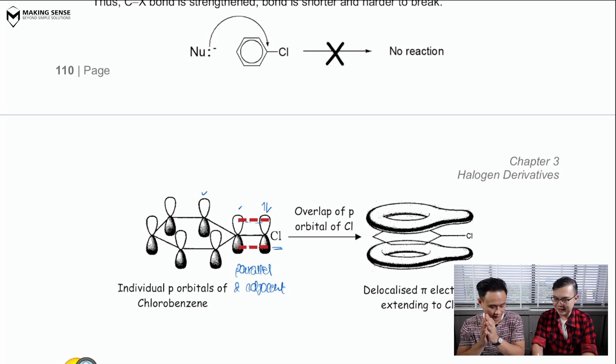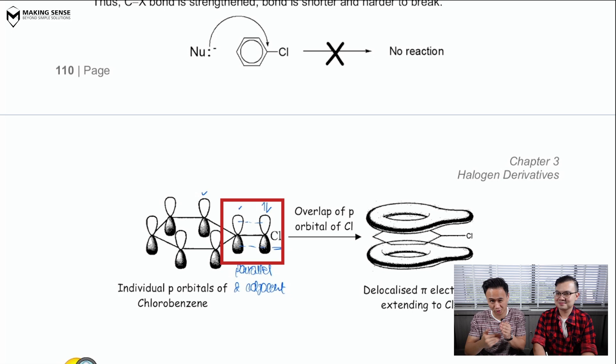Right. And the moment they overlap, what happens to the electrons? If the electrons get delocalized into the benzene ring and it gives rise to some form of a partial double bond.